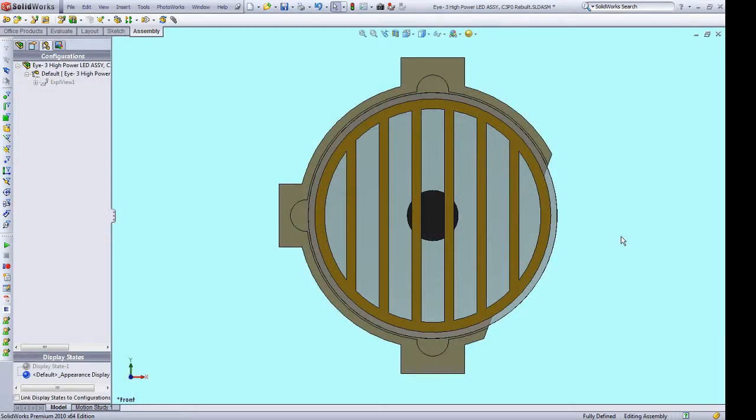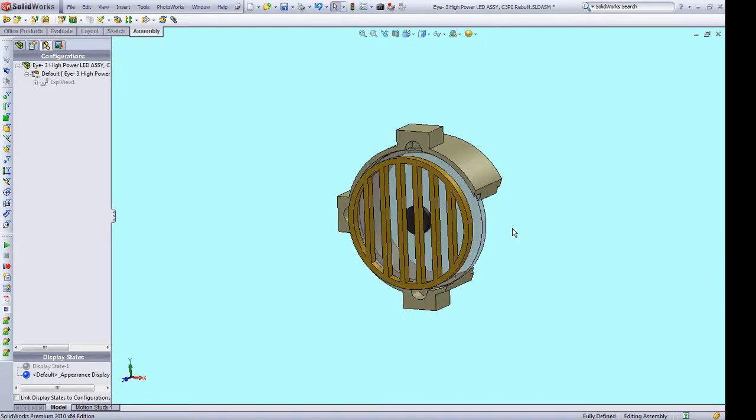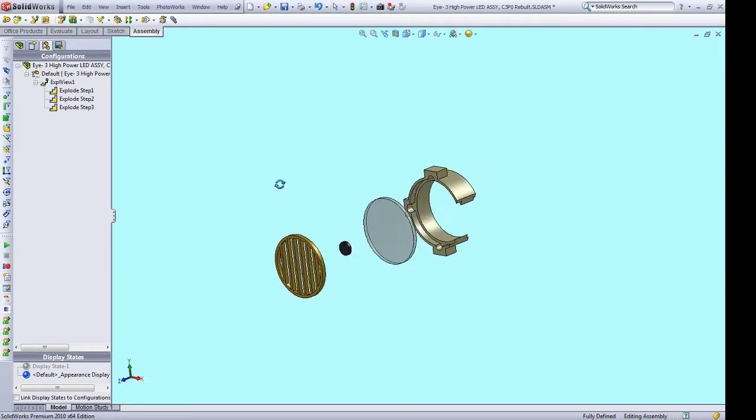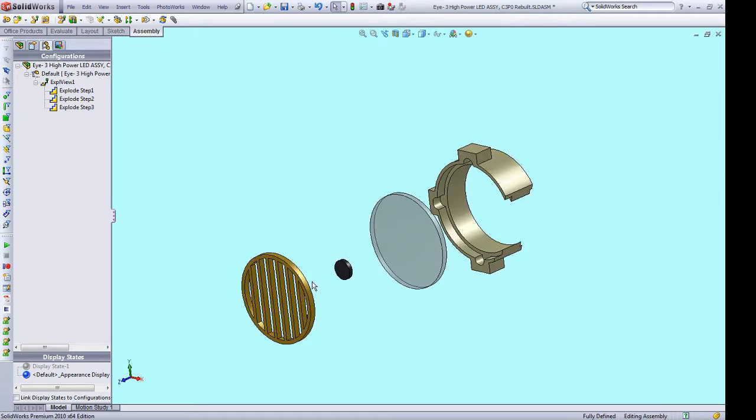So here we have C-3PO's eye assembly and I'll make an exploded view so you can see it better. So we have the front grill which will be painted gold. We have the iris which will be 3D printed black and we have a lens which we're taking from a halogen floodlight and it has a pattern that forms up the majority of what C-3PO's eye look like from the movie.